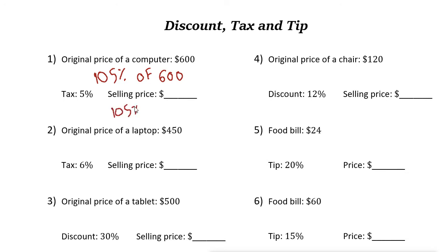On your calculator, one hundred five percent is just one point zero five. So put one point zero five times six hundred — the answer is six hundred thirty dollars. That's the selling price. Five percent of six hundred is thirty, and thirty plus six hundred is six hundred thirty dollars.